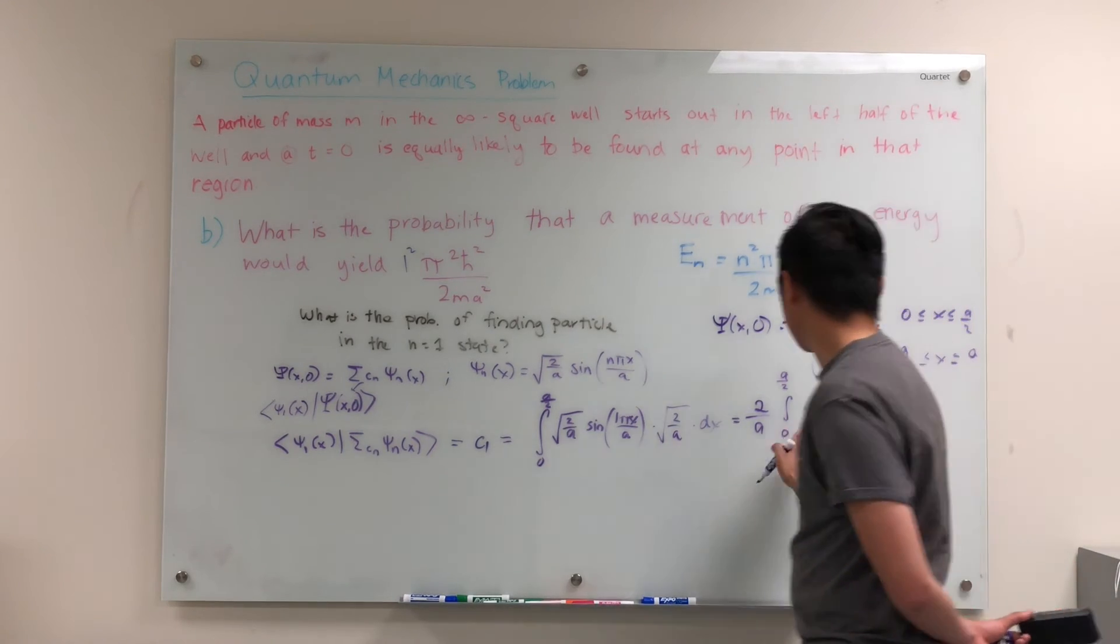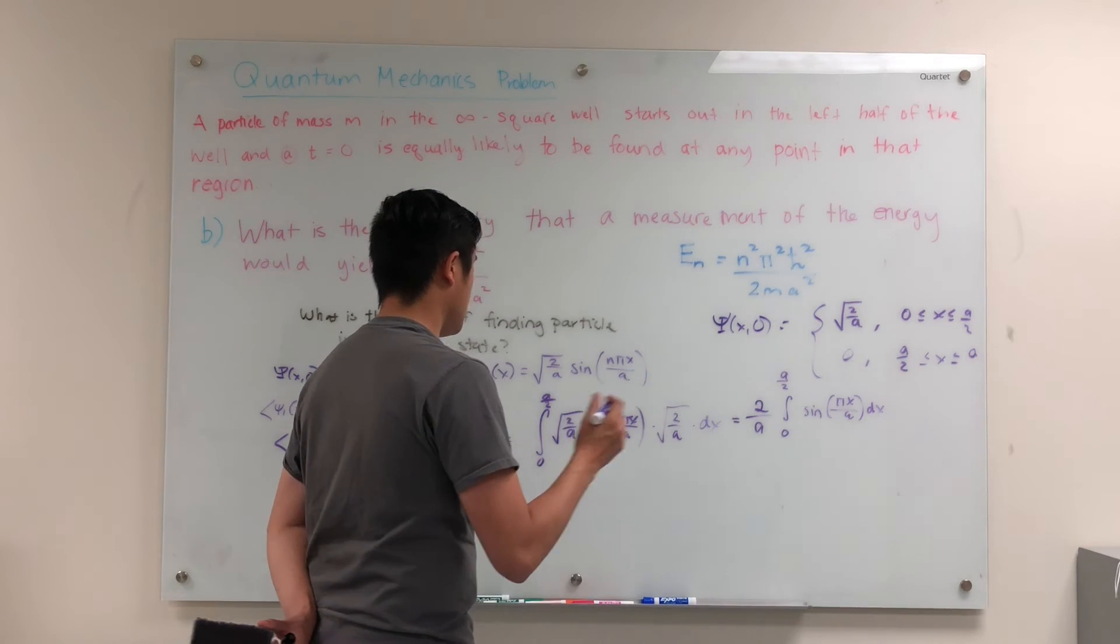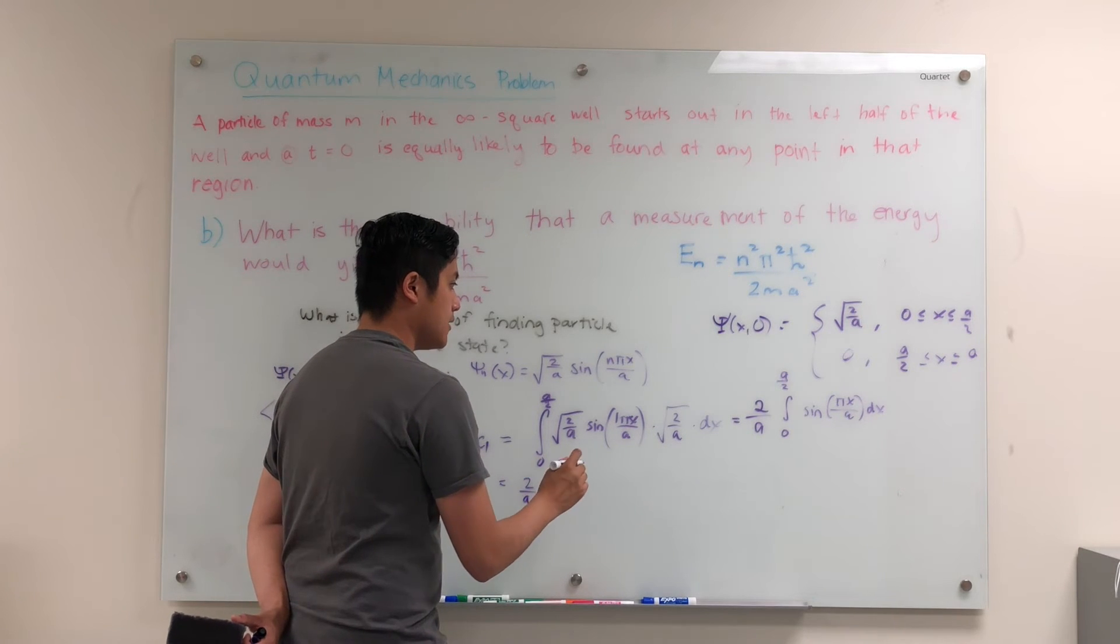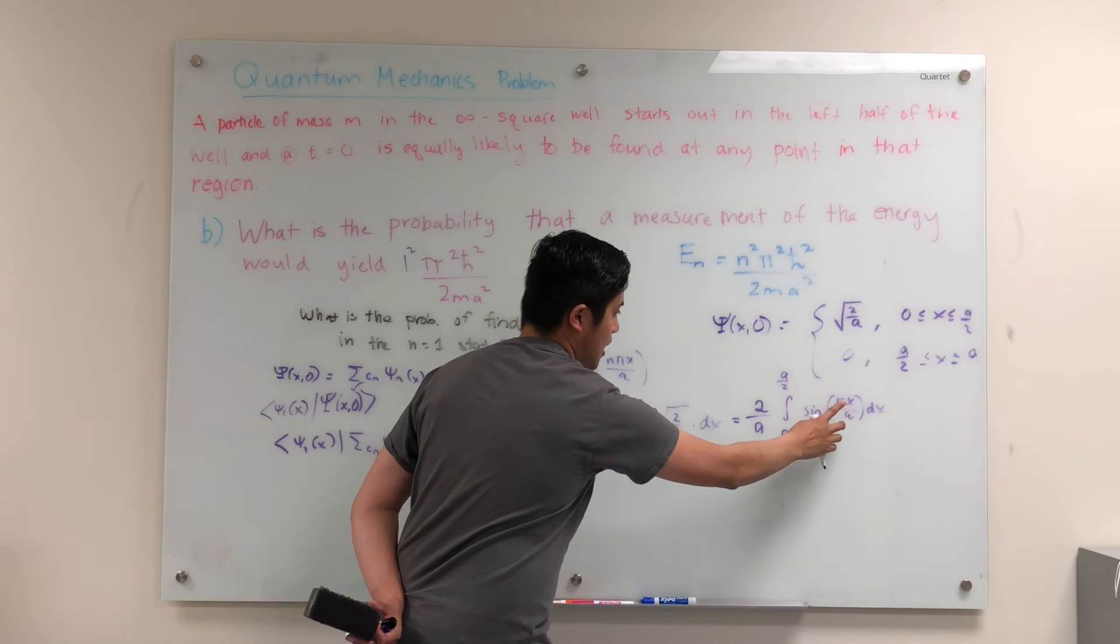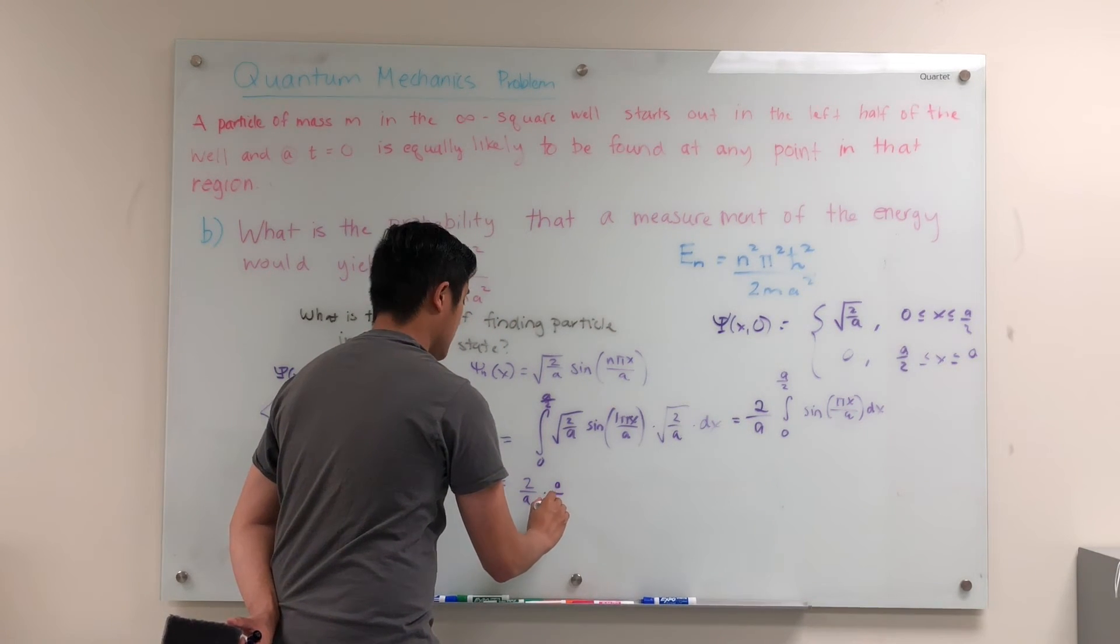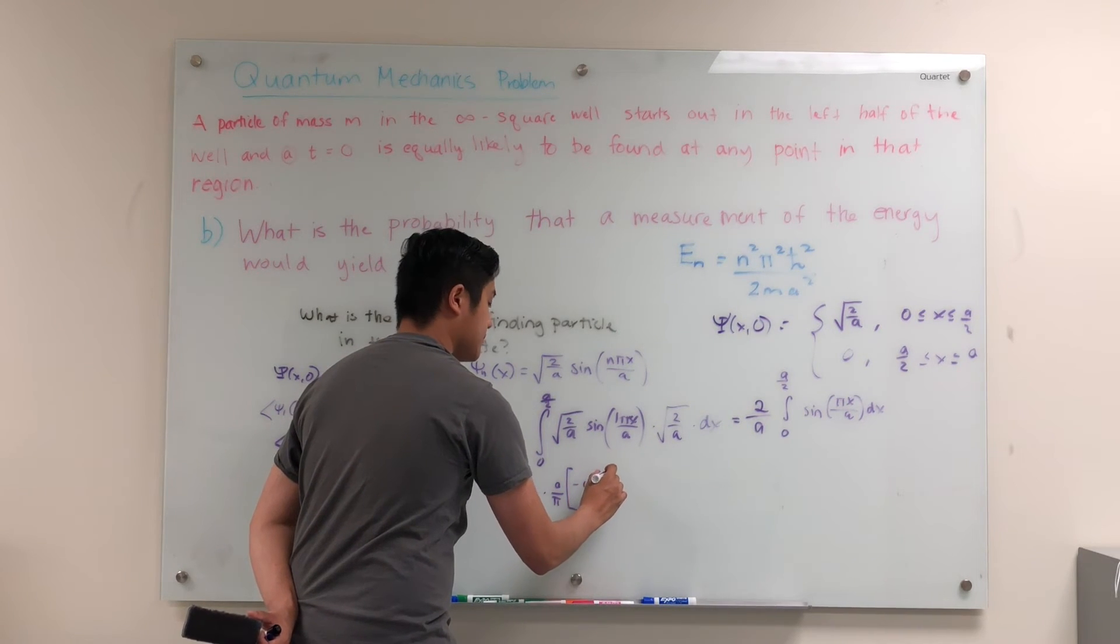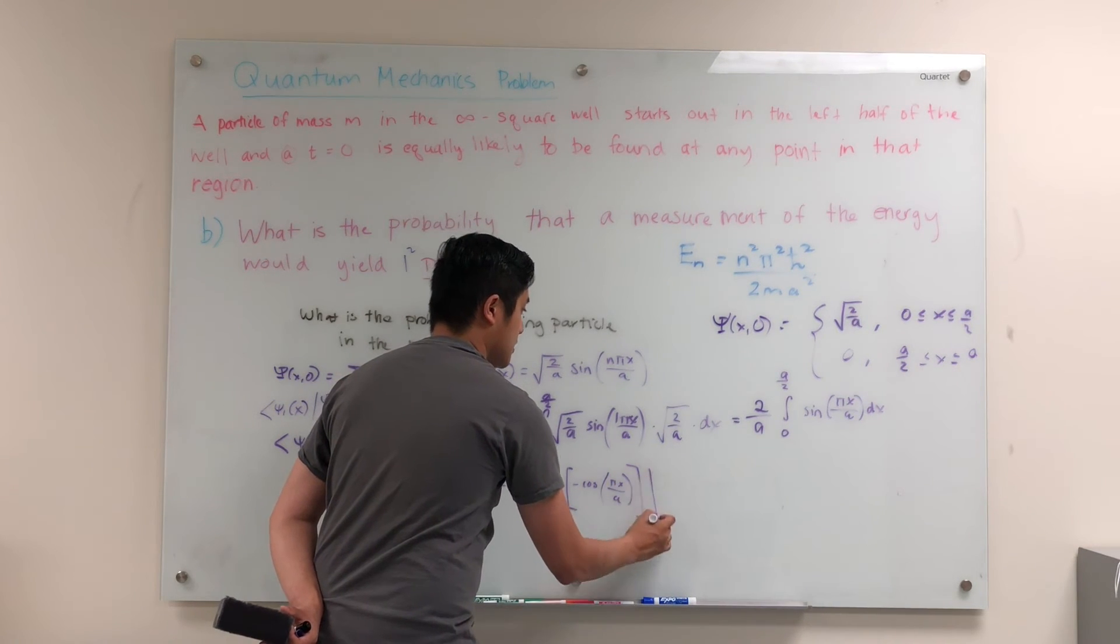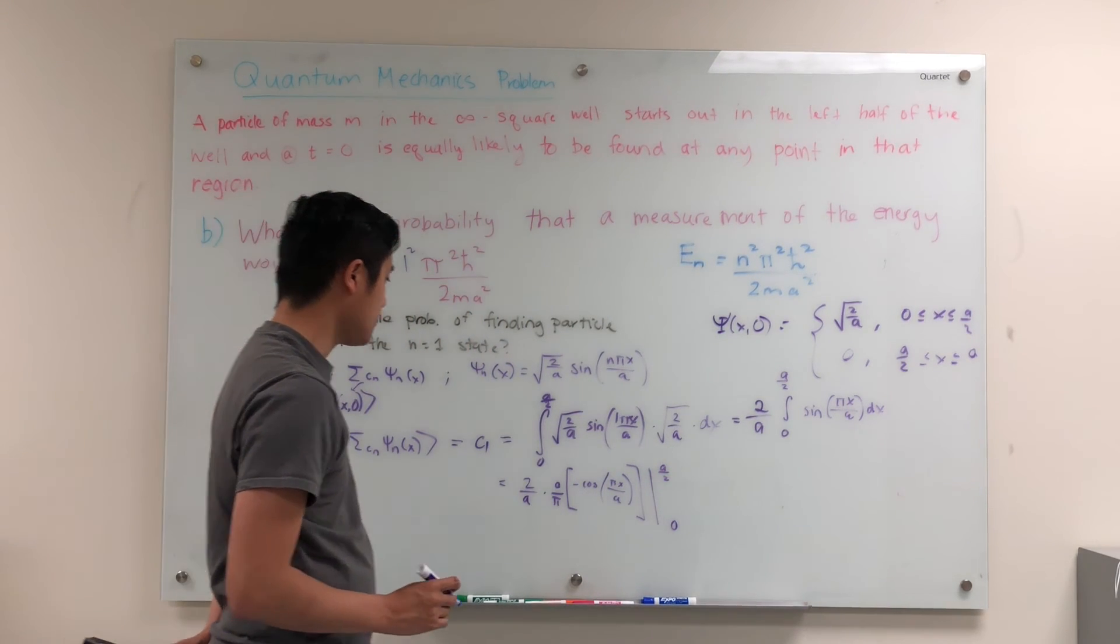And we know that the integral of sine is going to be a negative cosine. So we'll have 2 over a. Now we'll have, we have to make sure we take care of the factors. So we'll have 2 over a times a over pi. Then we'll have negative cosine of pi x over a. And we evaluate that between a over 2 and 0.